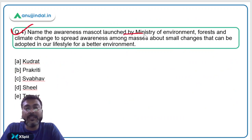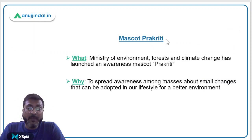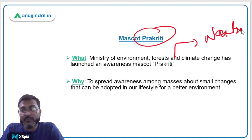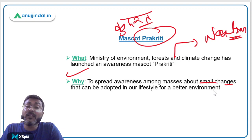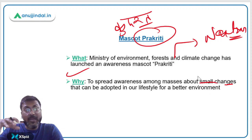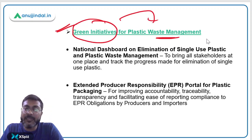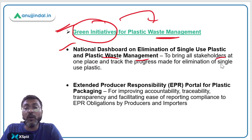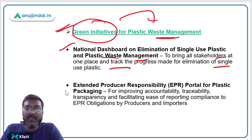Question 4: The Ministry of Environment, Forest and Climate Change launched an awareness mascot named 'Prakriti' — meaning nature — to spread awareness about small lifestyle changes for a better environment. During the same event, four green initiatives were launched for plastic waste management. First, the National Dashboard on Elimination of Single-Use Plastic and Plastic Waste Management, which brings all stakeholders together to track progress. Second, the Extended Producer Responsibility Portal for Plastic Packaging, developed by CPCB for improving accountability, traceability, and transparency.